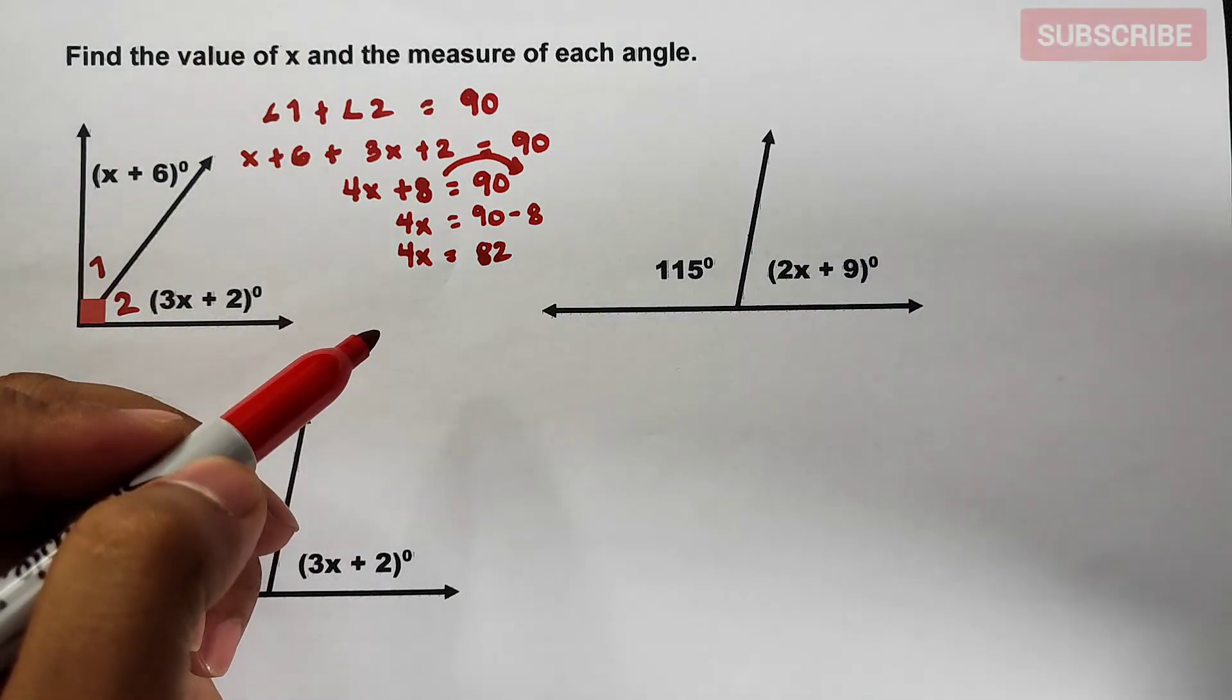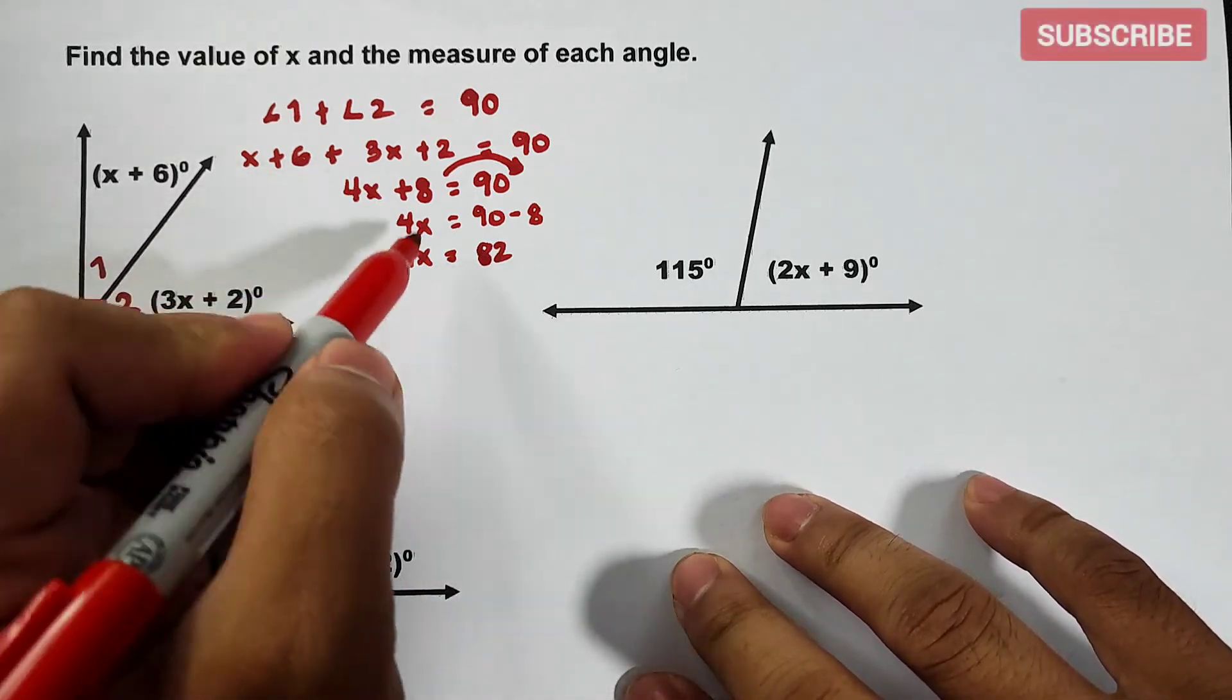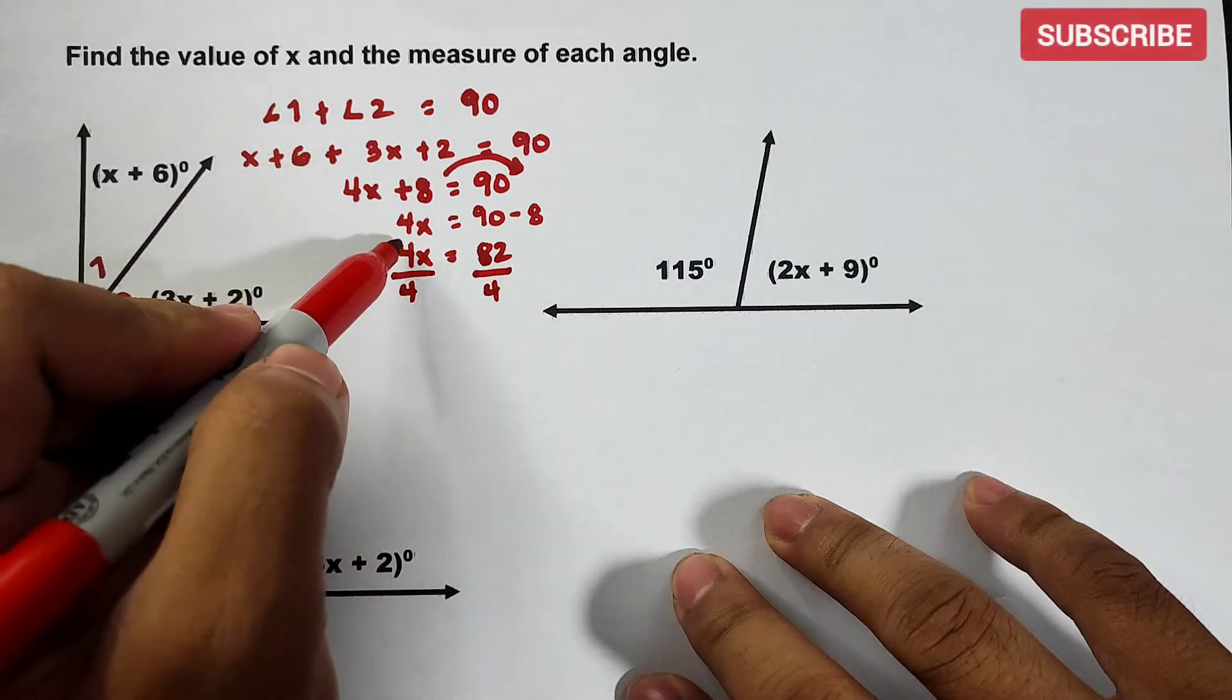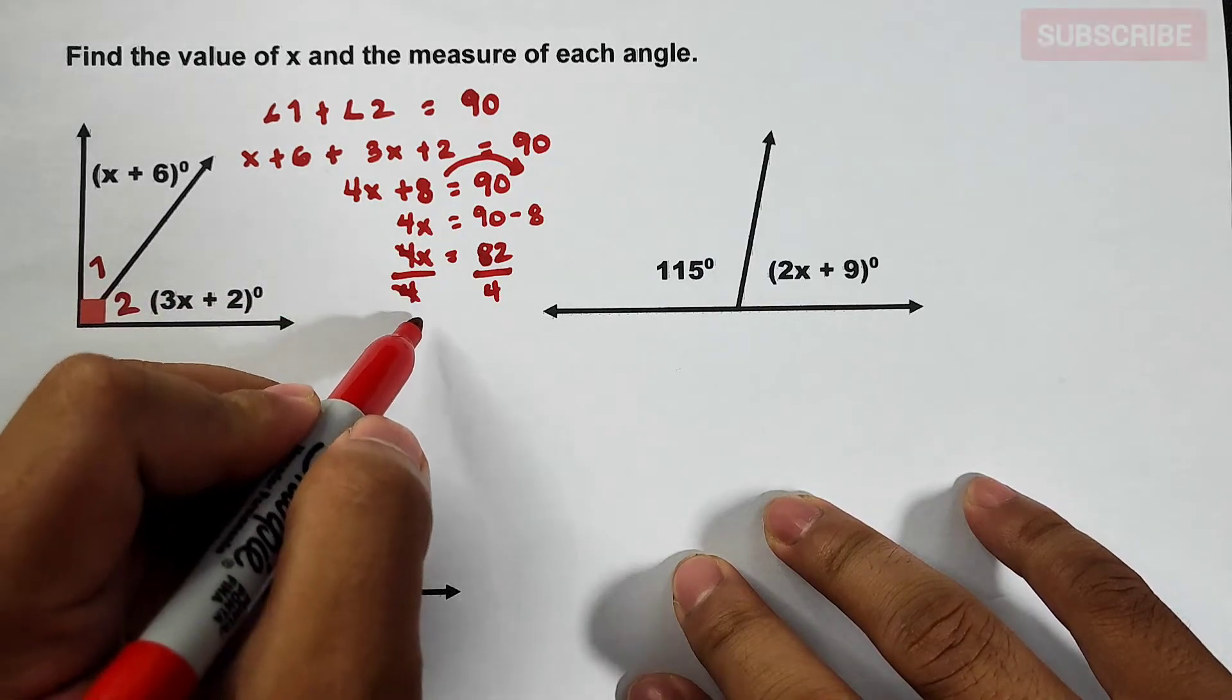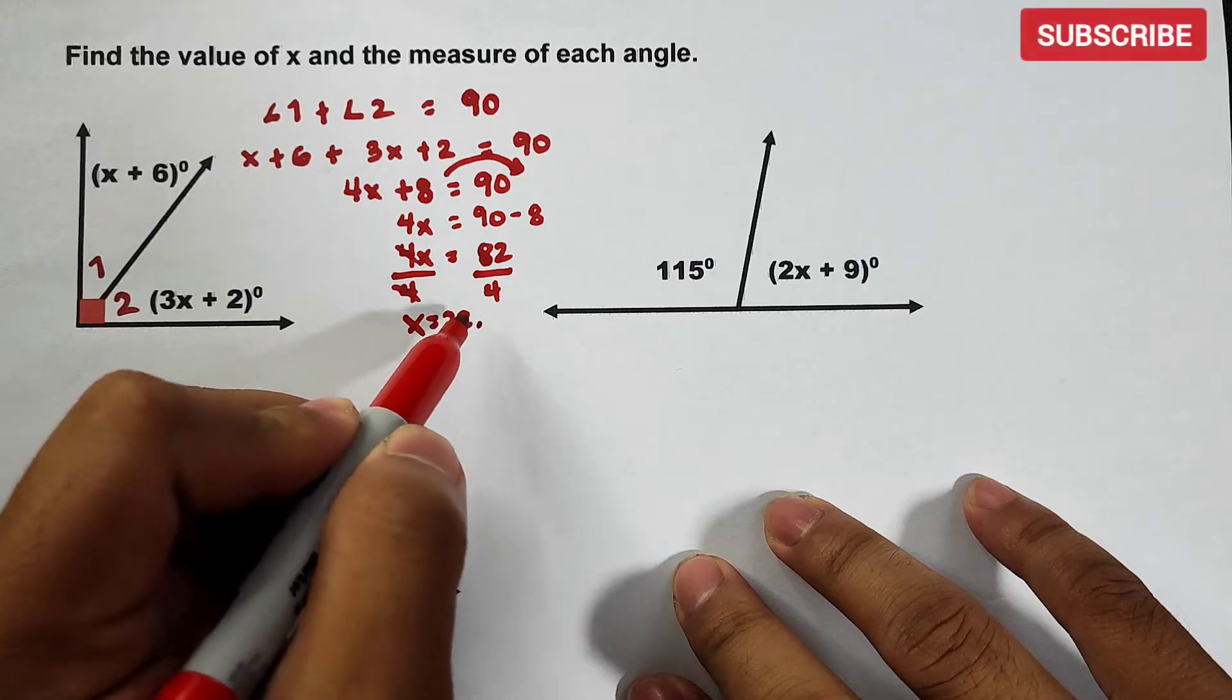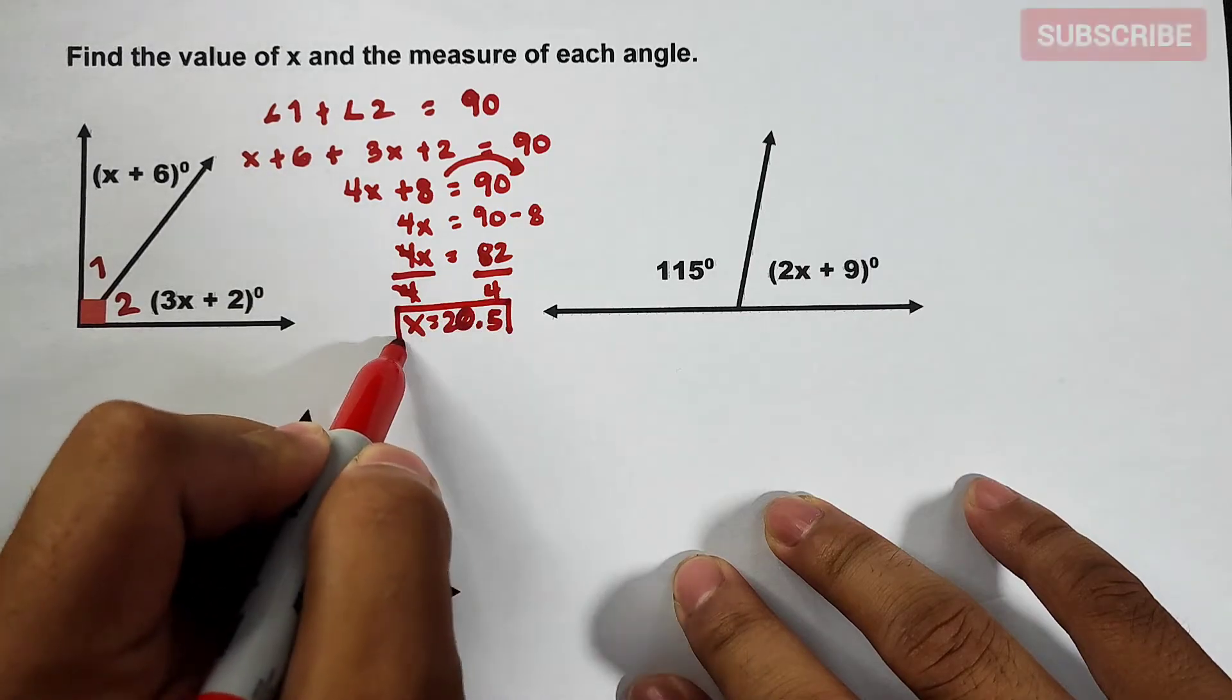And then what will happen here is that we will divide this by 4. This one is also by 4. Cancel, cancel. So as you can see, we have x which is equal to 20.5. That is the value of x.